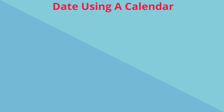But did you know that there are many ways that you can write the date on a calendar? Let's look at this first example. The D represents the date or the number, the M represents the month, and Y represents the year.